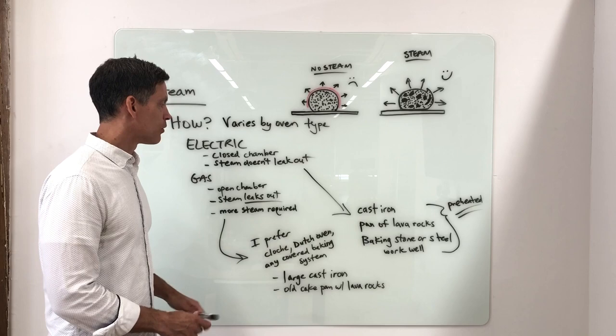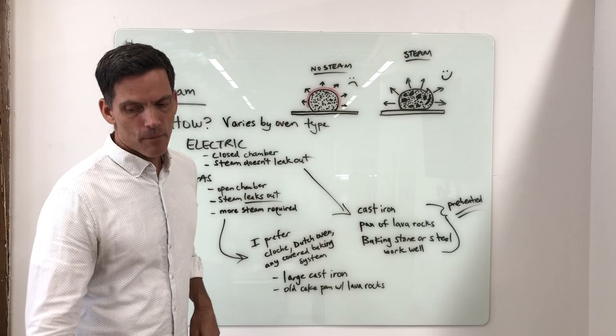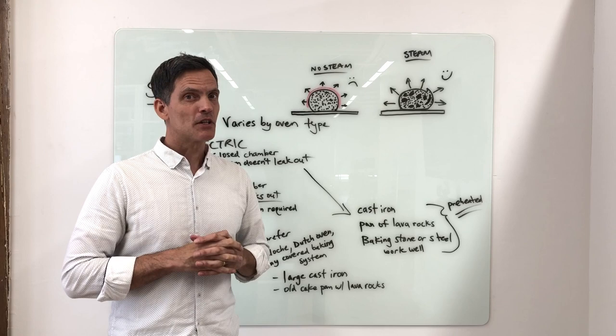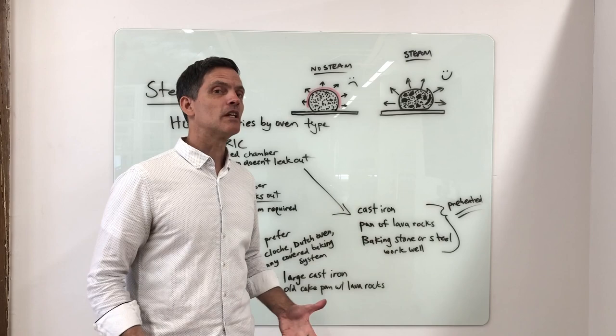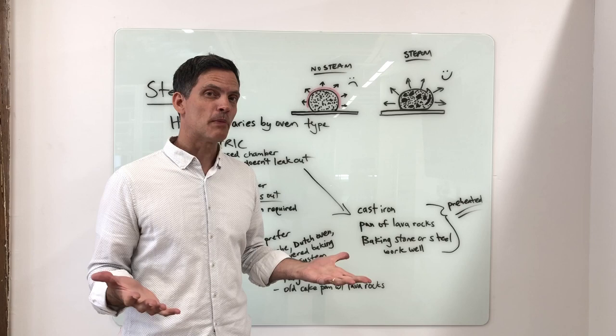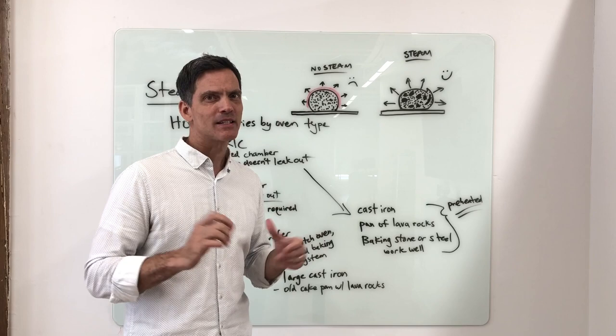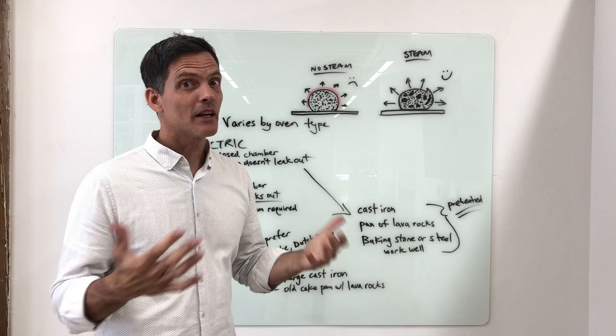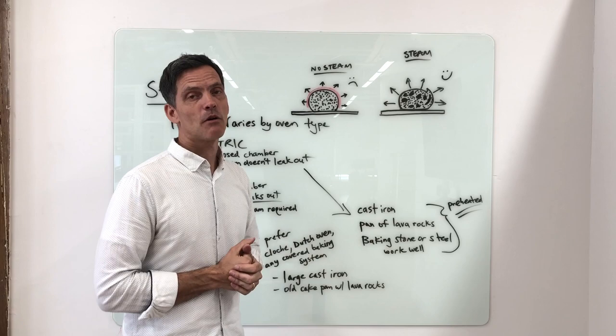In my gas oven at home, I prefer to use a cloche, Dutch oven, or any covered baking system. What about baguettes? I don't have the fancy pans. If I want to make baguettes at home, I use the pan of lava rocks setup because that gives me the greatest quantity of steam. I just roll with the punches and say I'm not going to have great steam, so they won't have that nice gelatinized crust. They're still delicious, but I get frustrated because I like them to be beautiful as well. The next oven I get will probably be an electric bake chamber because it works better at home.